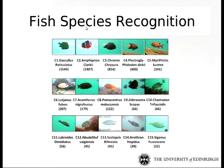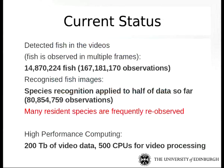Currently, our system is able to recognize 15 species, which represent 93% of the fish typically observed by our cameras, and species recognition has been performed on 8 million of these fish.